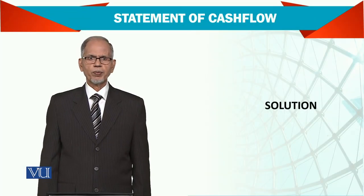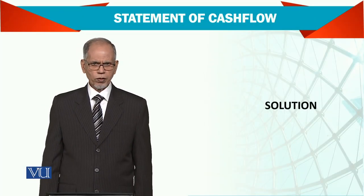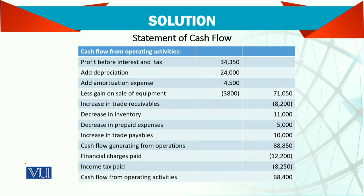Now let us prepare the solution of the cash flow statement. Looking at cash flow from operating activities, we start with profit before interest and tax. Then we add depreciation and amortization — this is derived from the difference between those non-current asset balances.